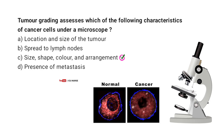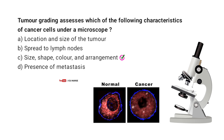Correct answer: C. Size, shape, color and arrangement. Tumor grading evaluates the microscopic appearance of cancer cells, helping to determine how abnormal they are and how likely the tumor is to grow or spread.